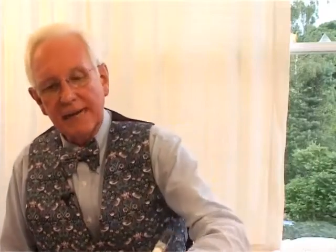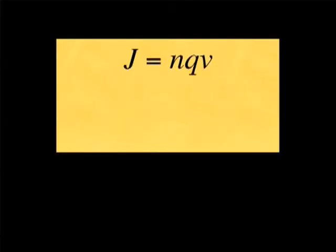The current density — whether for a superconductor or for a normal material — J, is equal to the number of current carriers, which are usually taken to be electrons, times the individual charge on the current carrier, times their velocity.